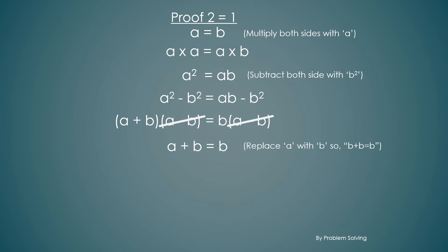Now replace a with b, so b plus b is equal to b. We get 2b equal to b and we'll cut the b's out to simplify. So we get 2 equal to 1 which is proved.